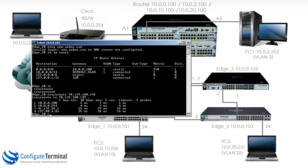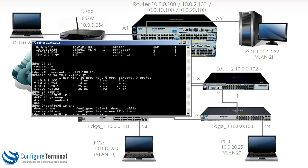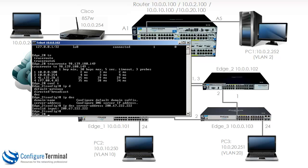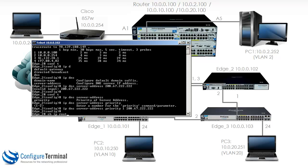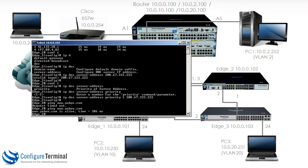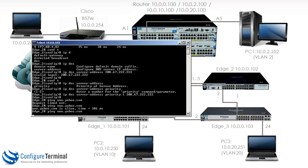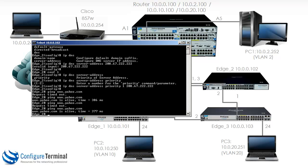To configure DNS on edge 2, we type 'IP DNS server address' with priority 1 and specify 208.67.222.222. Now when we ping yahoo.com — try again — the ping is successful. The DNS resolution was done; we were able to connect to a DNS server on the internet, do a name resolution, and then ping yahoo.com.